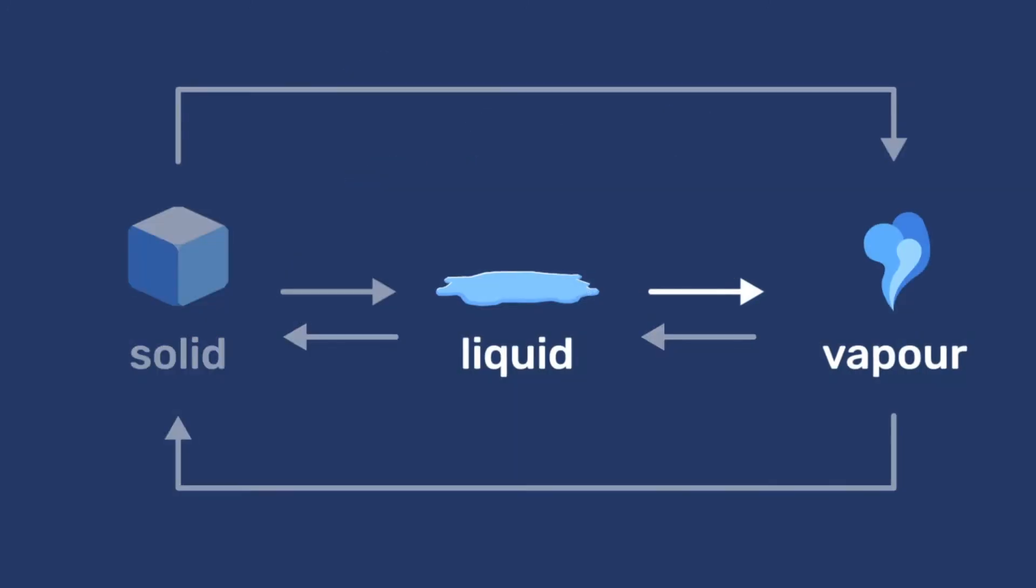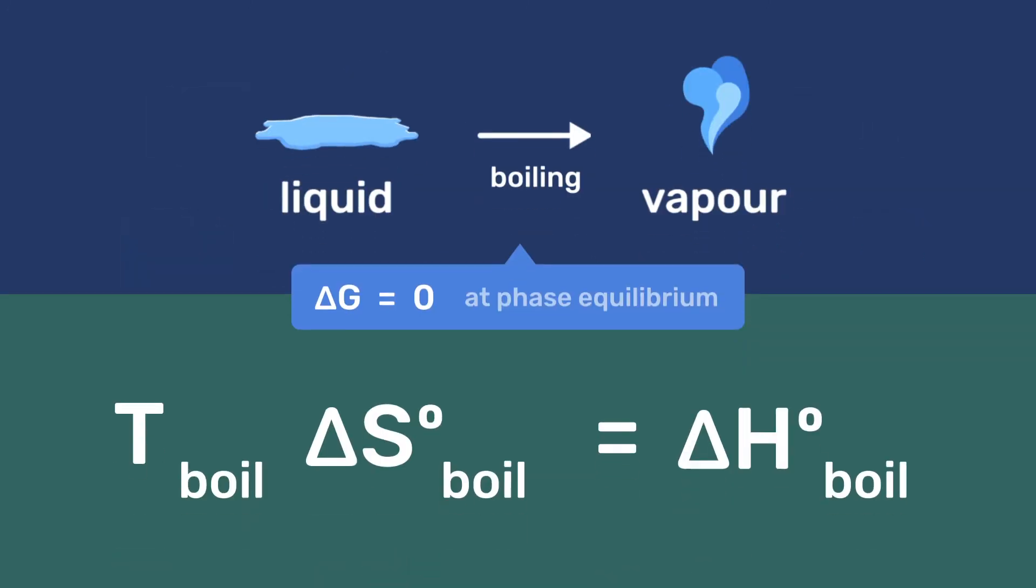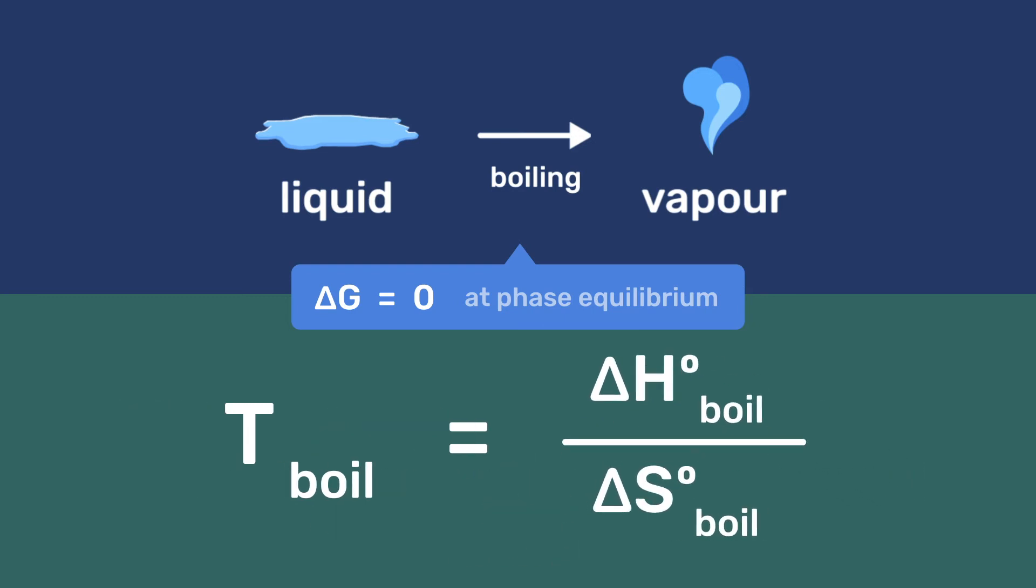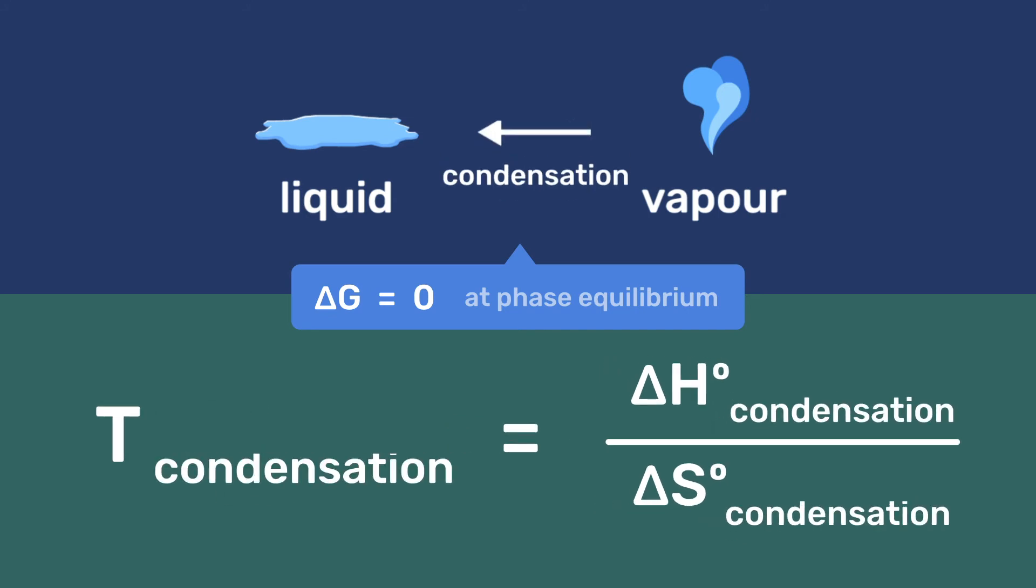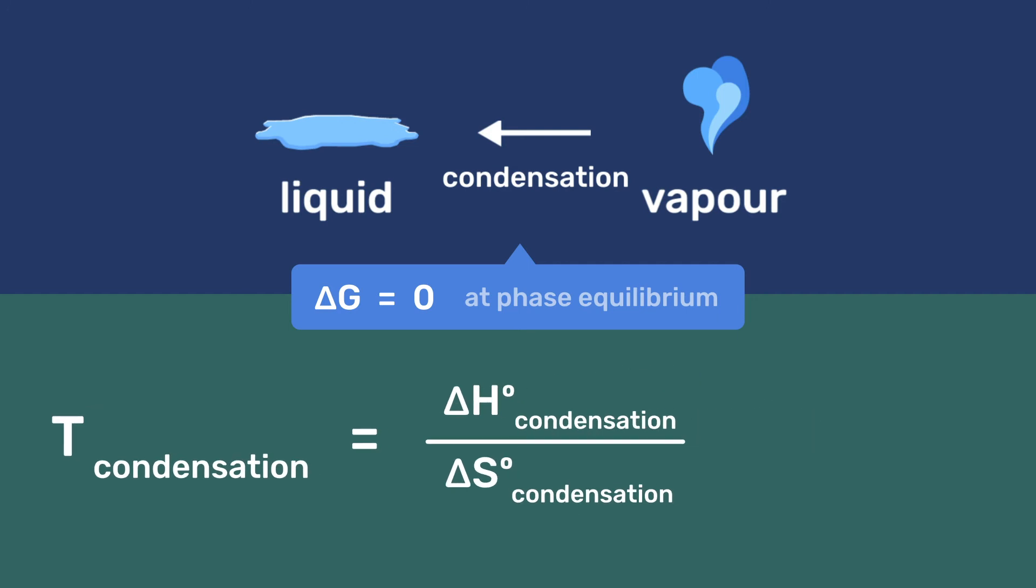In a similar way for boiling, we get T boil equals ΔH boil divided by ΔS boil, which has the same value if we look at the condensation reaction, since ΔH condensation equals minus ΔH boil, and ΔS condensation equals minus ΔS boil.